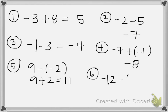So negative twelve minus a negative one — that minus a negative turns into plus three. So negative twelve plus three: they're opposite signs, so we subtract and keep the sign of the larger number, which is going to be a negative.